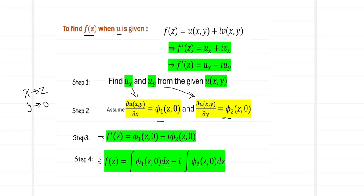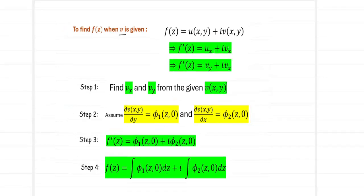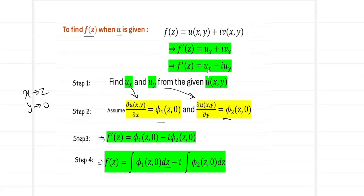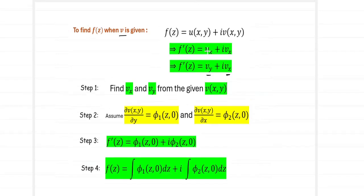When v is given, we do the same thing, but using the Cauchy-Riemann equations, the format for f'(z) becomes v_y plus i times v_x. Notice that the derivative is first taken with respect to y and then with respect to x — the reverse of the u case. Also, when u is given there is a negative sign between terms, and when v is given we have a positive sign.